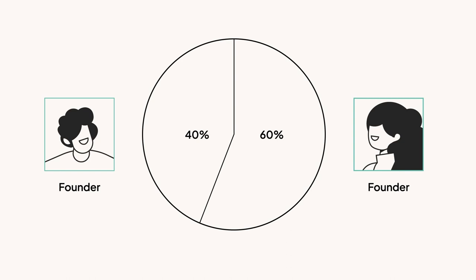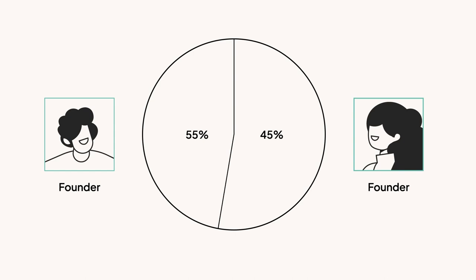Here at Carta, our data shows that among teams with two co-founders, around 40% of them split equity evenly. For the founders that don't, 55-45 is the median common split. Either way, at this early stage, the cap table might have just a few names on it — just the co-founders. So when you create your first cap table, you'll probably be dealing with exclusively common shares.